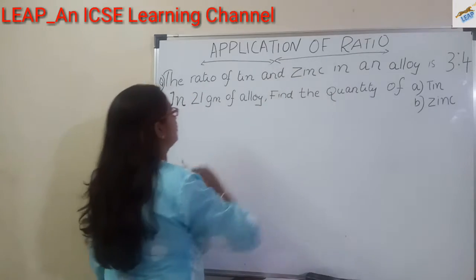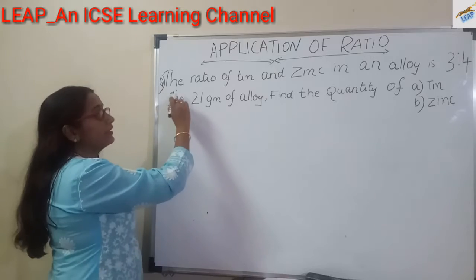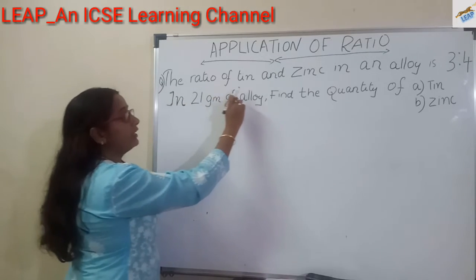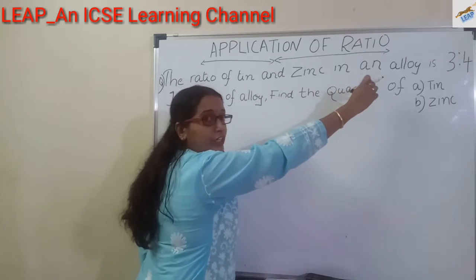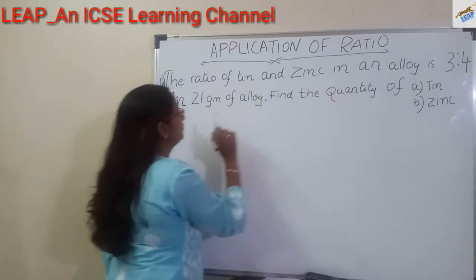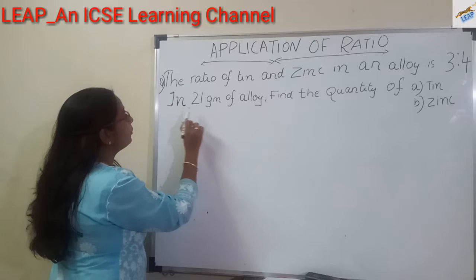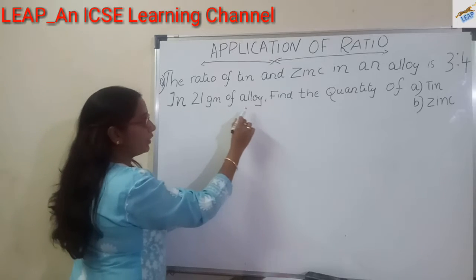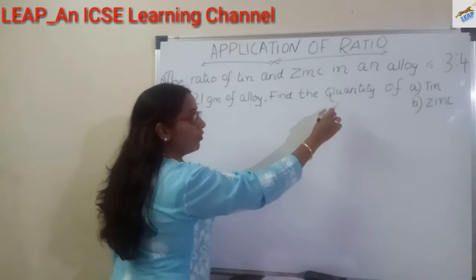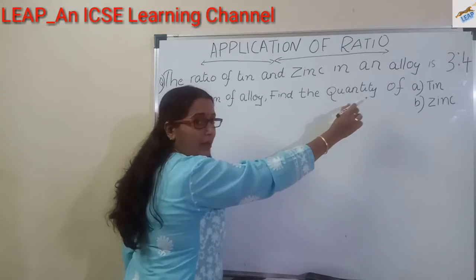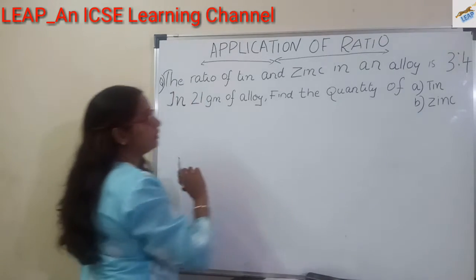Application of Ratio. The ratio of tin and zinc in an alloy is 3 is to 4. In 21 gram of alloy, find the quantity of tin and zinc.